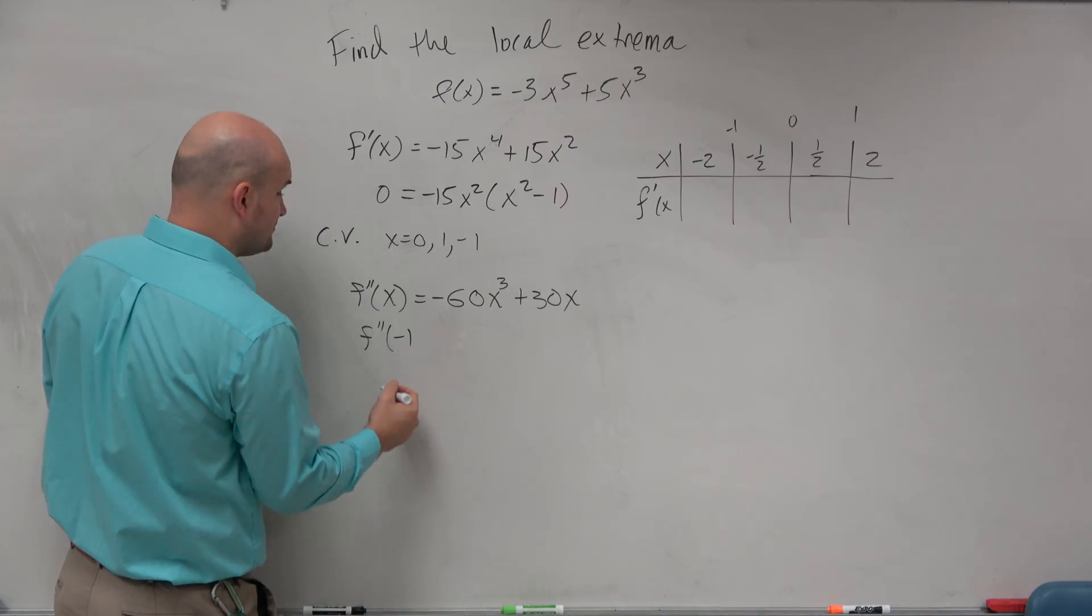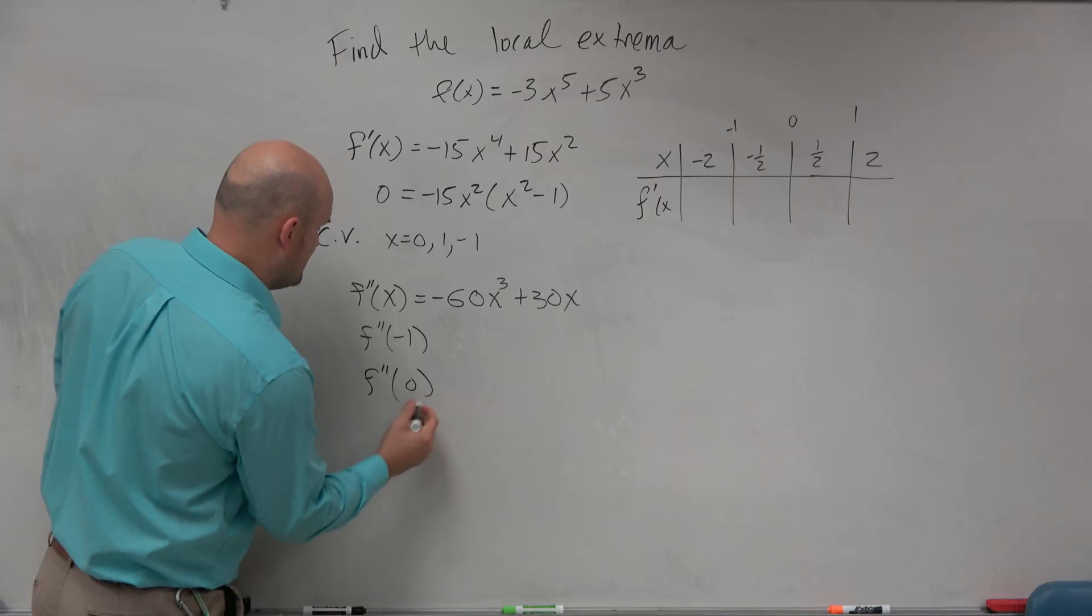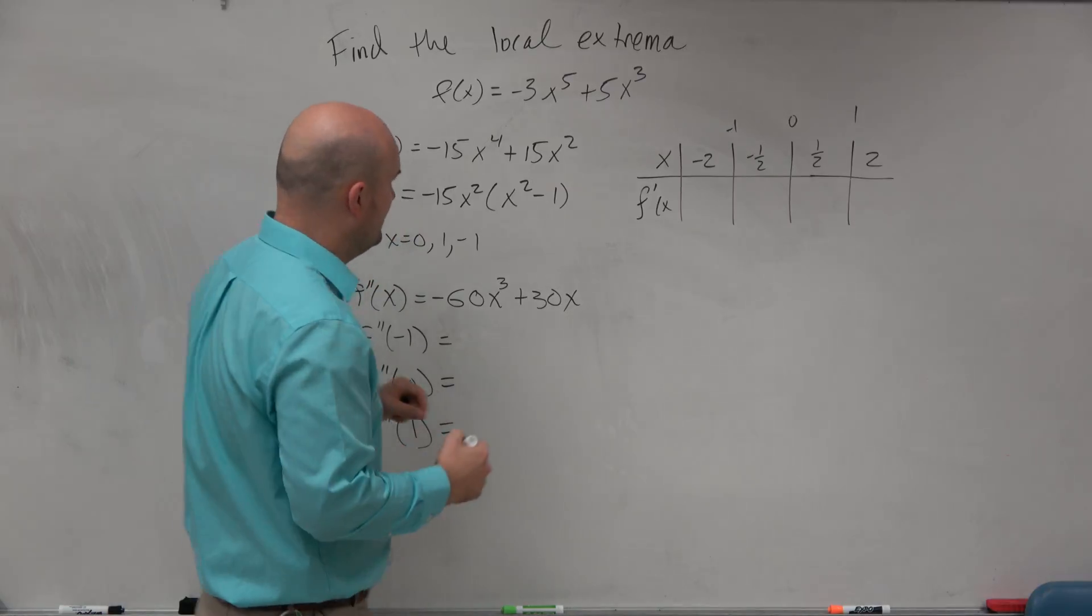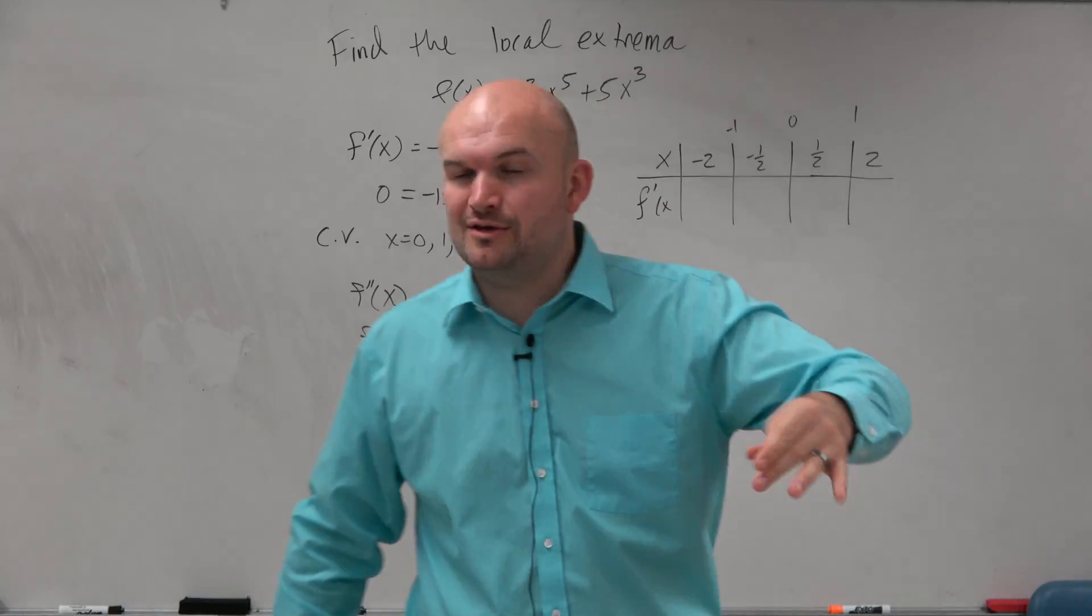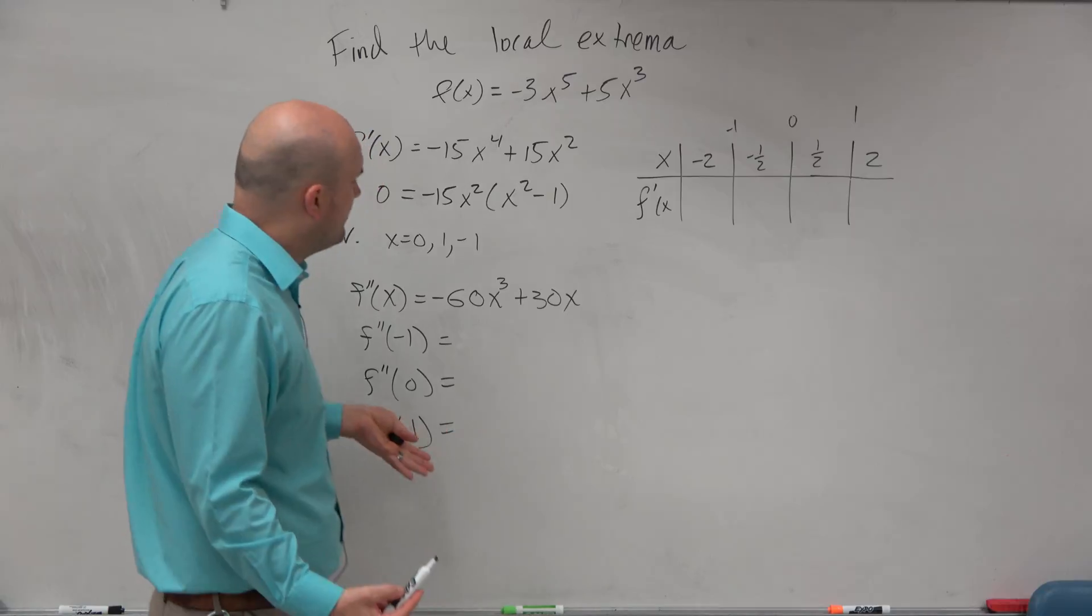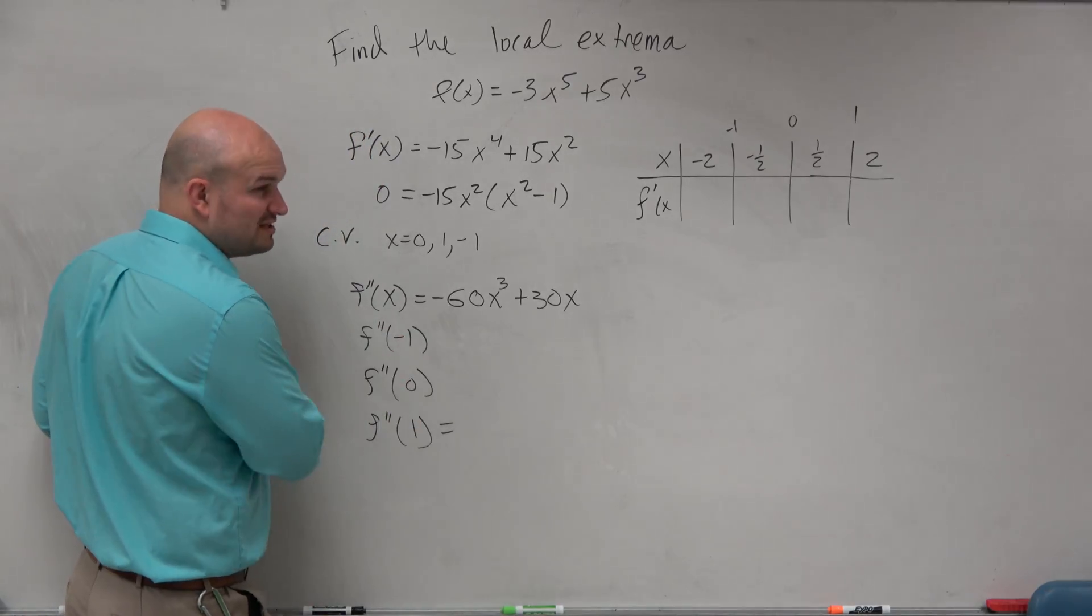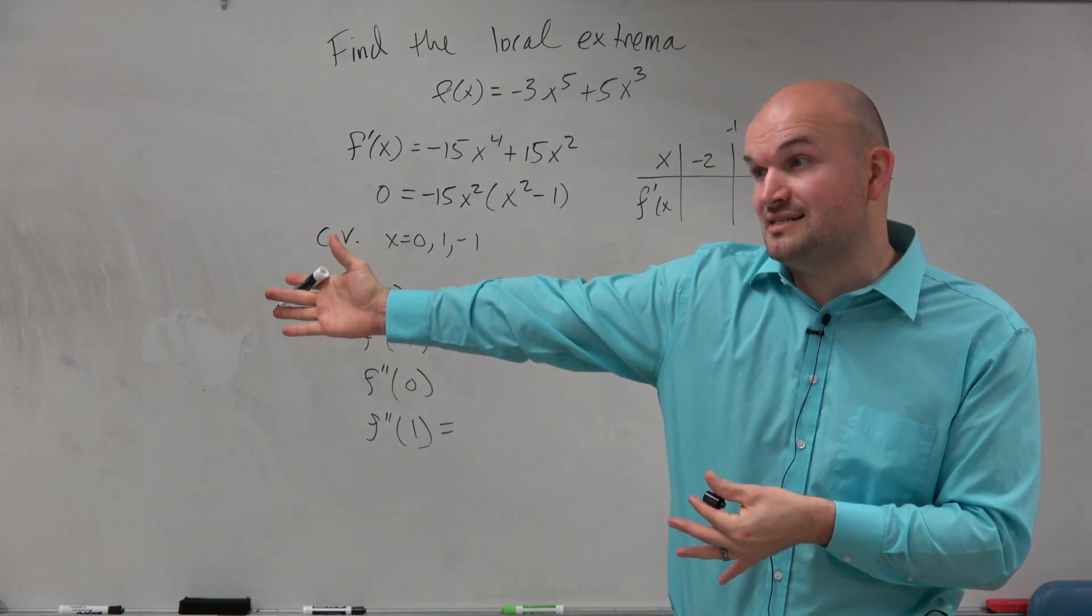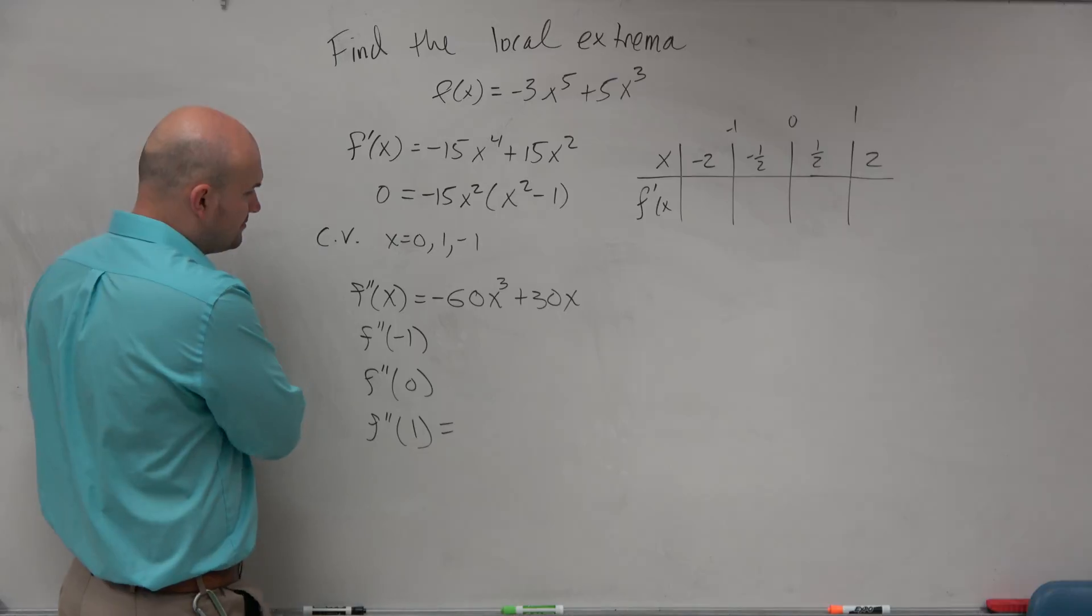What we could do is evaluate for f double prime of negative 1, f double prime of 0, and f double prime of 1. And this is sometimes easier. We're doing one less value. And also when you take the second derivative, you have less powers, sometimes it just becomes a little bit easier. We just want to determine if it's positive or negative. By the second derivative test, we just want to know, is it greater than 0, less than 0, or equal to 0? Just like the first derivative test, we just care about the sign.